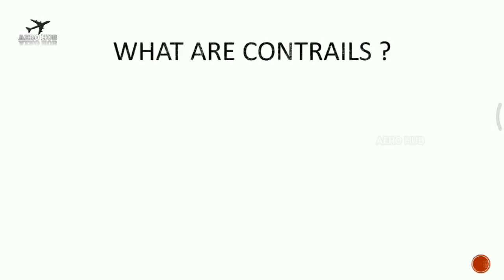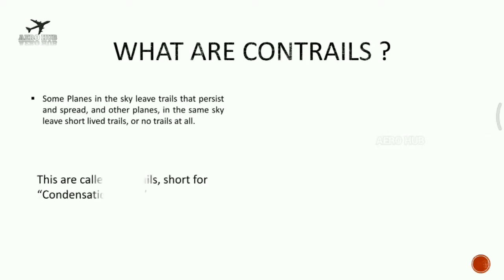What are contrails? Some planes in the sky leave trails that persist and spread, and other planes in the same sky leave short-lived trails or no trails at all. These are called contrails, short for condensation trails.